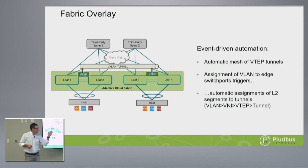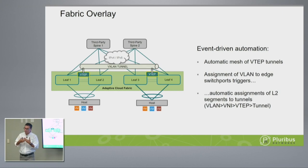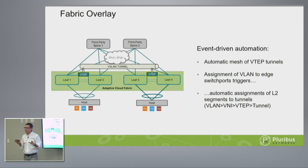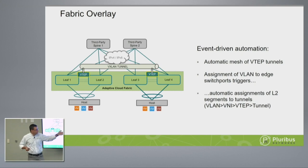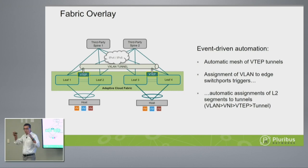What's really interesting is what we do on the overlay side. Across all the leaves, we build VTEPs, and all these VTEPs automatically build a mesh of tunnels — you don't have to worry about building tunnels. The VTEP tunnels come up automatically. As soon as you assign a VLAN to a physical port on the switch, we automatically stand up the entire L2 segment across the entire infrastructure — taking care of mapping VLAN to VNIs, assigning VNIs automatically, mapping VNIs to VTEPs, all on demand and dynamically on behalf of the customer.